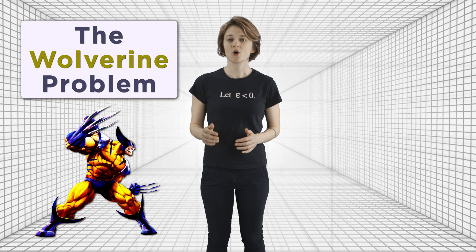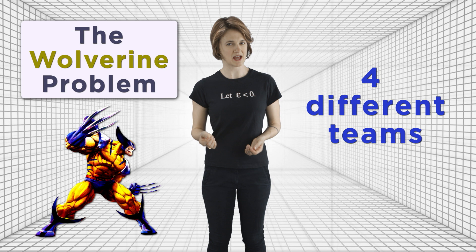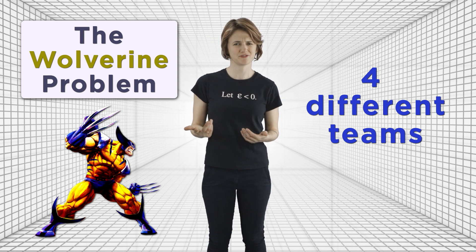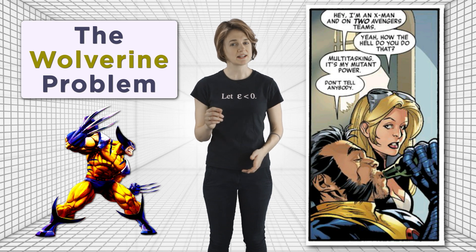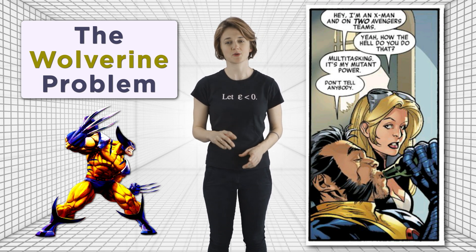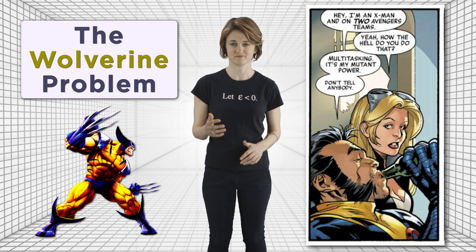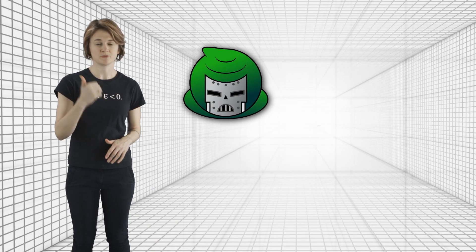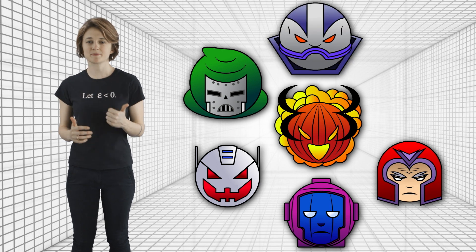We're going to use it to solve the Wolverine problem. At one time, Wolverine was on four different superhero teams and he needed to balance his time. A super team can't efficiently save the world if they're constantly waiting around for their teammates. Here's the setup: seven Omega-level supervillains are attacking the planet on the same day — Doctor Doom, the Dread Dormammu, Kang, Ultron, Magneto, Apocalypse, and Thanos.